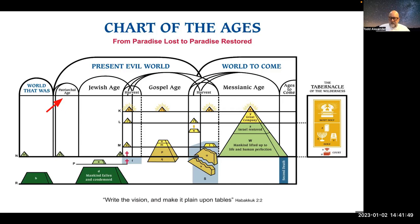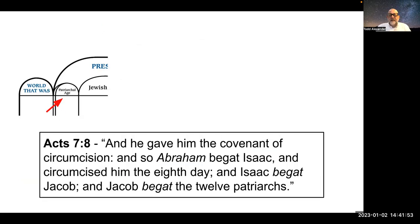So let's take a look at the patriarchal age. Here we have a beautiful testimony of Stephen the disciple in Acts chapter 7, verse 8: 'And he gave him the covenant of circumcision. And so Abraham begat Isaac and circumcised him the eighth day. And Isaac begat Jacob, and Jacob begat the 12 patriarchs.' This was Stephen's testimony right before he was stoned, detailing the plan of God. The patriarchal age covers the life of Abraham, Isaac, and Jacob, ending with the death of Jacob, when God would start working with Jacob's 12 sons, who would become the 12 tribes of Israel.